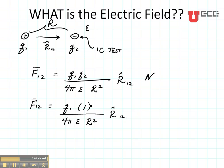This, if we put per coulomb, is going to give us the electric field. So the electric field at point 2 is equal to Q1 divided by 4 pi epsilon R squared R from 1 to 2.